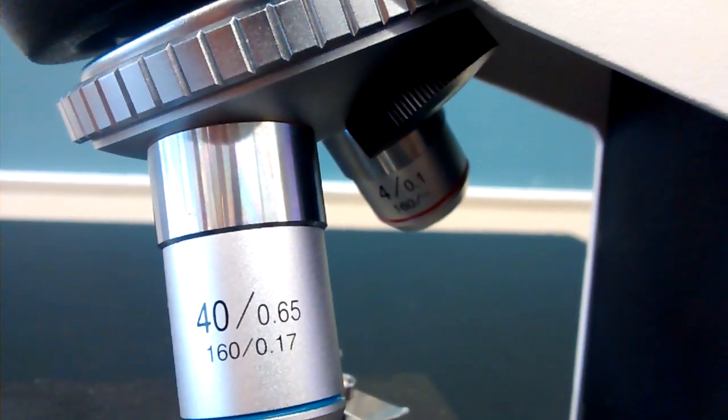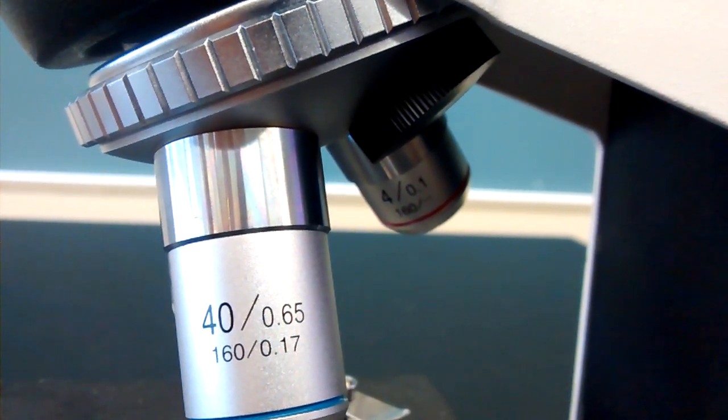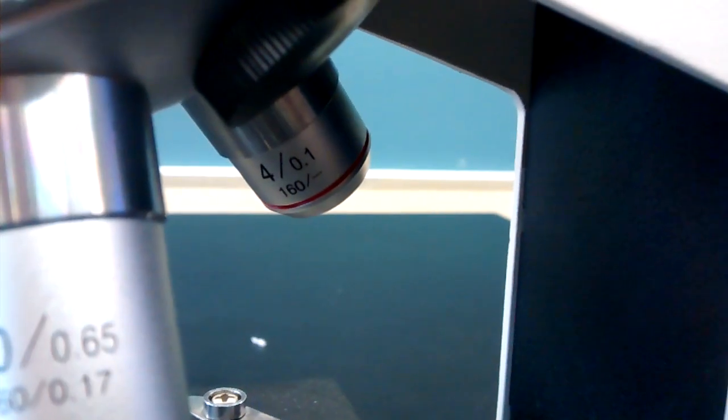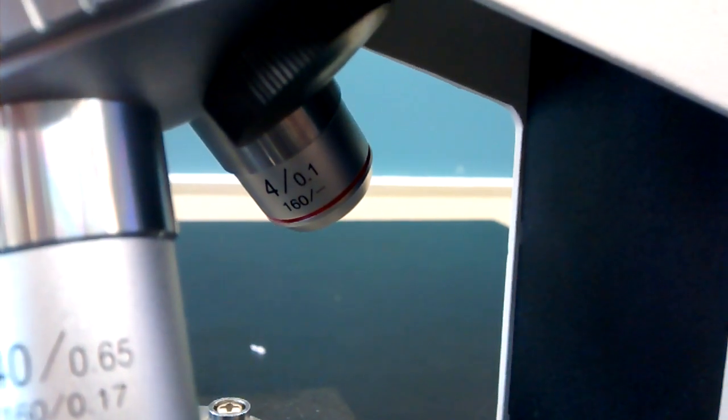What's meant by that is if we use that red banded scanning objective, it will magnify four times on its own. But you don't use it on its own. So it's four times the ten of the eyepiece. When you're using this red objective lens, you are seeing things 40 times as large as they would appear with the unaided eye.